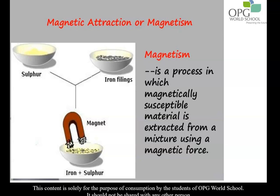They are hand picking, sieving, threshing, and winnowing. The fifth method of separation is also for a solid-solid mixture, but the mixture must contain iron pieces. This method is called magnetic separation. Magnetic attraction or magnetism is a process by which a magnetically susceptible material can be taken out from a mixture using magnetic force.